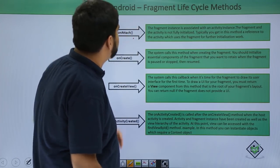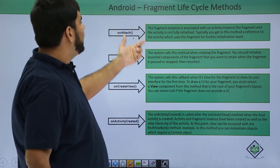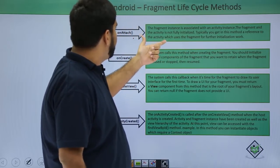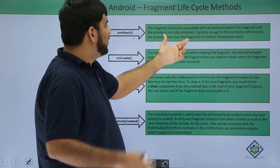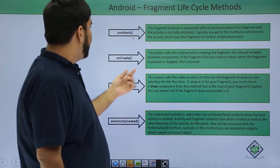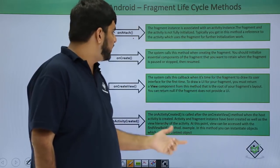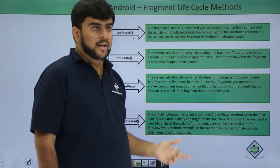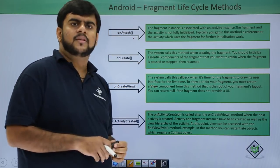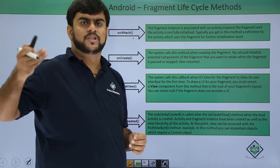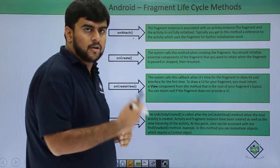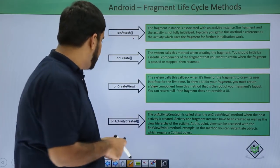The first method is on-attach. This is called when the fragment is associated with an activity instance. The fragment and the activity are not fully initialized, but there is a reference that the activity will use this fragment for further work. On-create is called when creating the fragment — we initialize essential components to be retained when the fragment is paused or stopped and then resumed. You use this state to reset or initialize to a particular level.